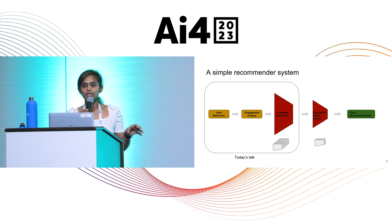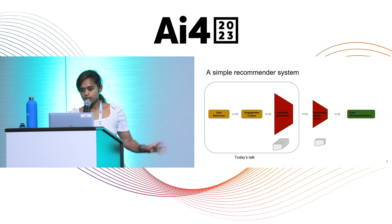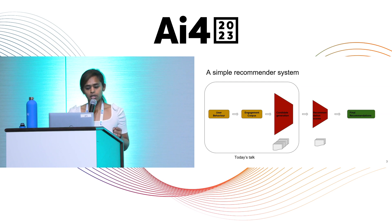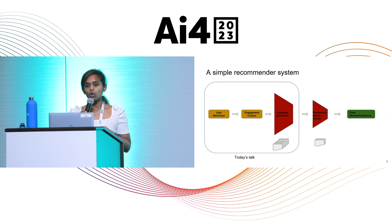Or if people from a certain country are always interested in certain kinds of products, we'll rank those higher. We take all these candidates and rank them using a ranking system, and then you see the final recommendations showing products you'd want to buy. In today's talk, I will be focusing on the boxed area — how do you take this user behavior, create a dataset, and generate candidates. The ranking part is a different beast altogether, and most mature recommender systems fall into this same kind of backbone.